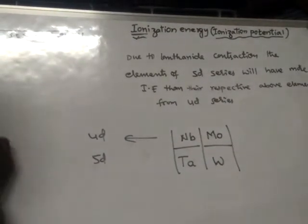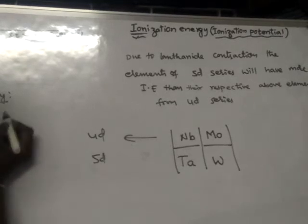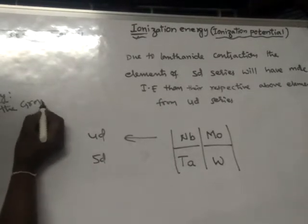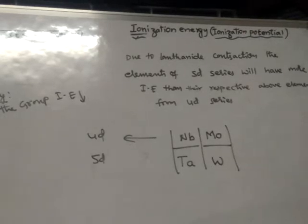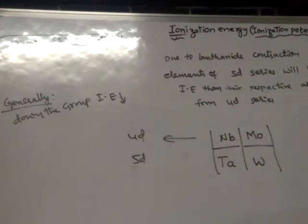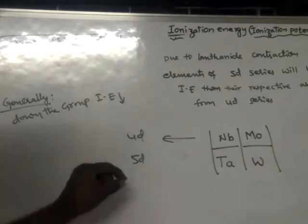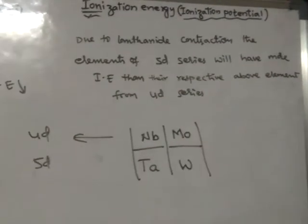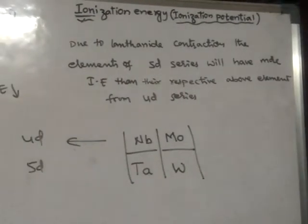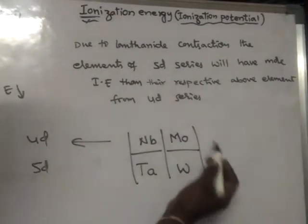Generally, down the group, ionization energy should decrease. But in the case of 4d and 5d elements, due to lanthanide contraction, the ionization energy increases instead.